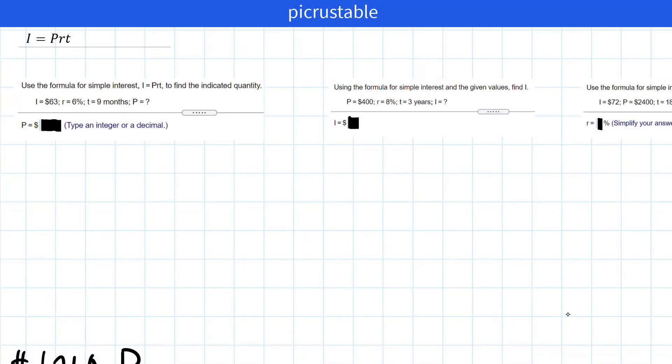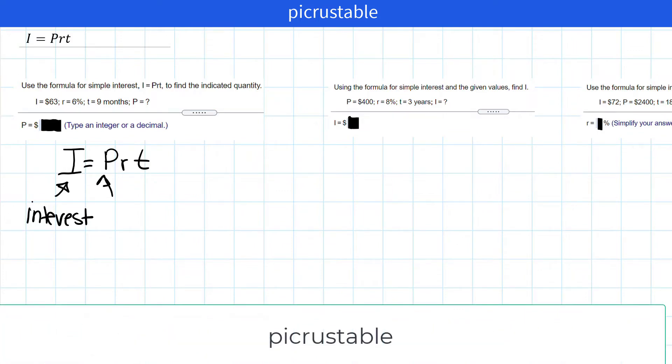Let's do some simple interest problems. Use the formula for simple interest, I equals PRT, to find the indicated quantity. First let's write our formula I equals PRT. We're going to review here for a second. This is my interest. This is my principal.